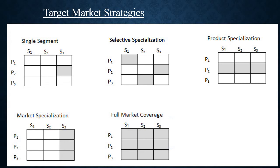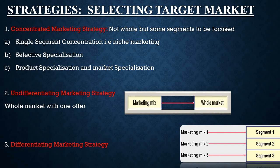In market specialization, you focus upon one segment and offer different products in that segment only. In full market coverage, you want to satisfy the needs of each and everyone in the market. The second strategy is undifferentiated marketing strategy, where the whole market is served with one offer — the same marketing mix is offered to the whole market.